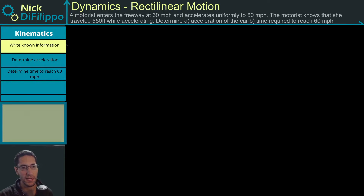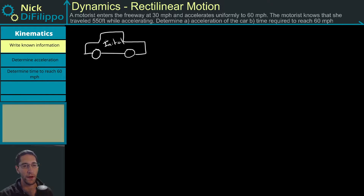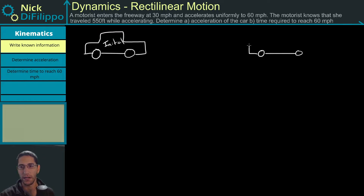What we need to do first is list out all the information that we have. I'm going to start by drawing the car in two places. Here will be my initial information about the car, and then over here I'll draw the car again. This is when the car has moved, and this will be my final information about the car.